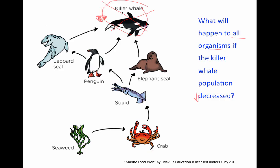Alright, so if the killer whale decreases, all of its prey — the leopard seal, the penguin, and the elephant seal — are all going to increase because there aren't as many predators to eat them. So elephant seal, penguin, and leopard seal are going to increase, which would then cause the squid, their prey, to decrease because there are more predators. So there are more elephant seals and penguins eating the squid, so they're going to decrease. If there are less squid, the crabs are going to increase because there are less predators — the squid — eating them, which would then cause the seaweed to decrease because there are more crabs to eat them. Please erase your dry erase marker board.